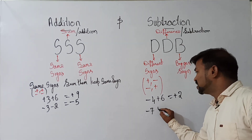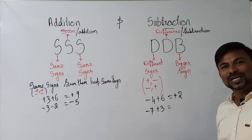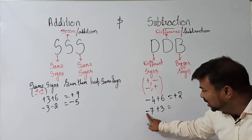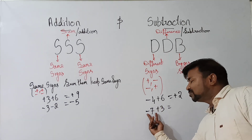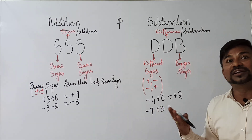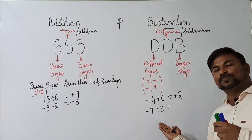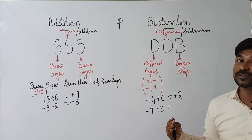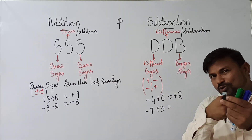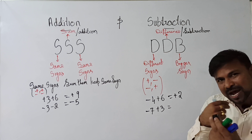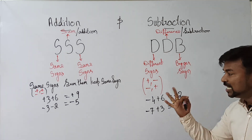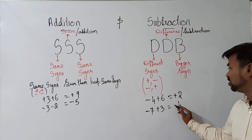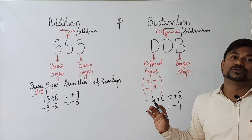So minus 7, plus 3. Check it out — the sign is the symbol before the number. Here it is minus sign, this is plus sign. Do they have same signs or different signs? Different — this is minus, that is plus. We are having different signs. Then what are we supposed to do? Difference — meaning subtraction, take away the smaller number from the bigger number. Take 3 from 7, you get 4. What is the bigger number sign? Minus. So the answer is minus 4.